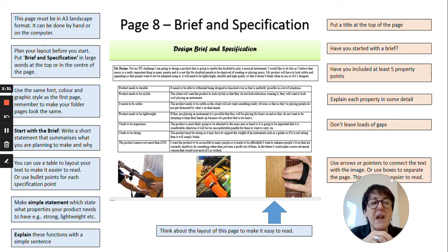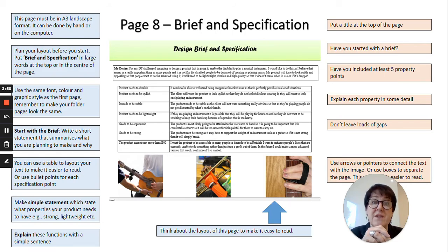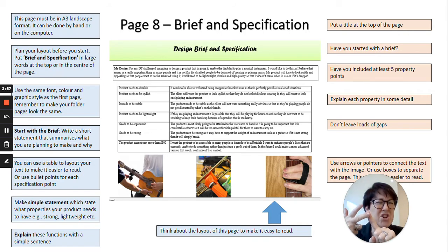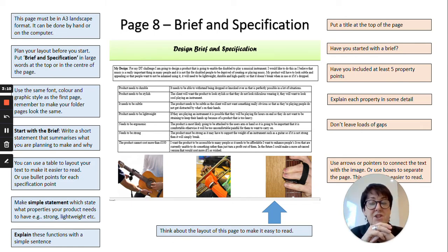The top of the page needs to be a couple of sentences that sum up your brief. Think about what you're going to communicate and how you're going to say it. Underneath that, you then need to have your specification. The specification is a list of things that your product is going to do — a list of functions you're hoping to achieve. This student has made a list on the left-hand side of the statements describing what his product is going to do.